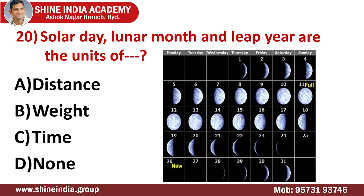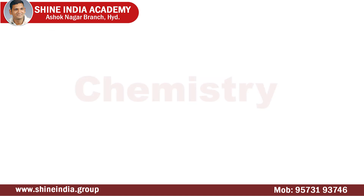Question number twenty: solar day, lunar month, and leap year are the units of? The answer is time. A solar day is the time it takes for the earth to rotate about its axis. A lunar month is the duration between successive new moons, with a period of about 29.53 days. And we all know about the leap year. These are all units of time.